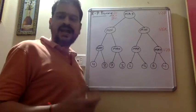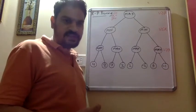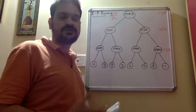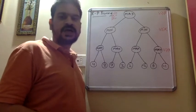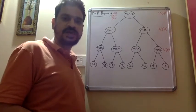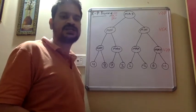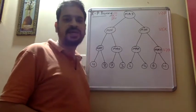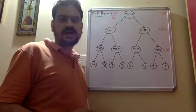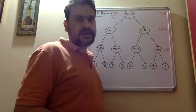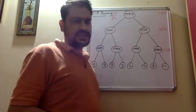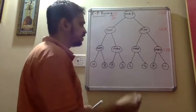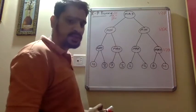Alpha and beta are initialized similarly. The value of V is initialized to minus infinite for the maximizer and plus infinite for the minimizer. The value of alpha starts at minus infinite and beta starts at plus infinite. Let's start the procedure of alpha-beta pruning.